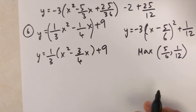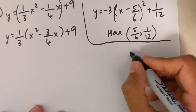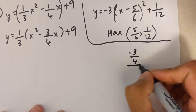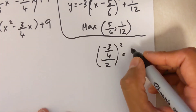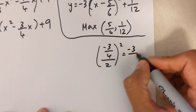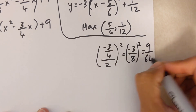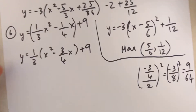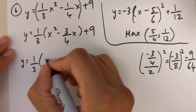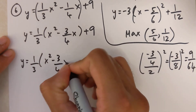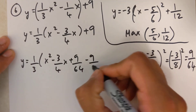Writing the coefficient on the side: negative 3 over 4 divided by 2, squared — that's negative 3 over 8 squared, which equals 9 over 64. Coming back: y equals 1 over 3 times the quantity x-squared minus 3 over 4 x plus 9 over 64 minus 9 over 64, plus 9 outside.